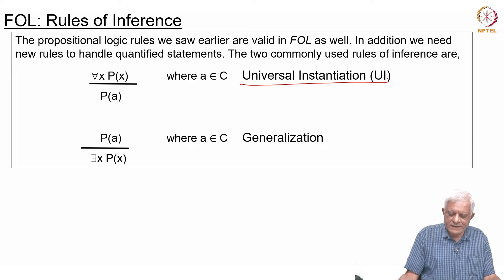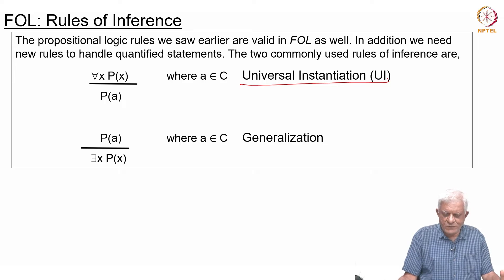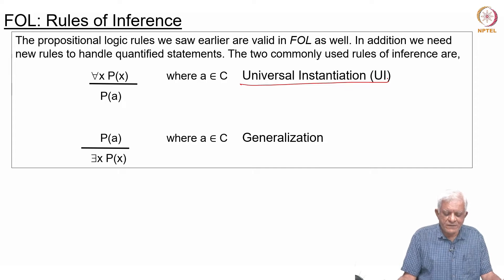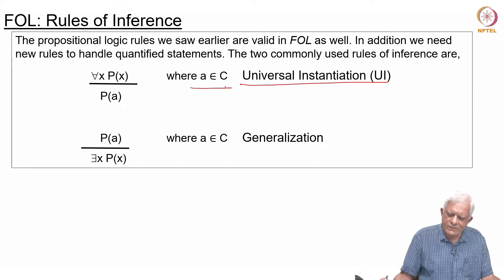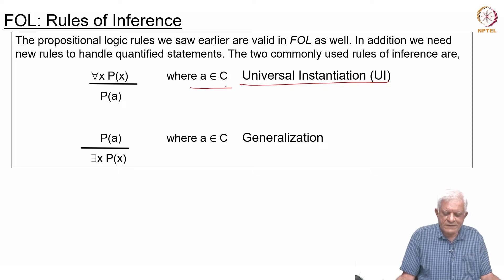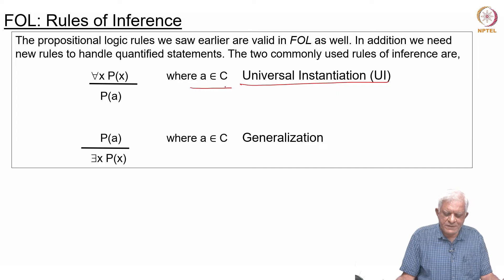What it says is that if for all x P(x) is true, what does that mean? It means that for every x that you can think of in the domain, P(x) must be true. Which means that if you choose a specific individual a which comes from the set of constants that you have, then P(a) must be true essentially.